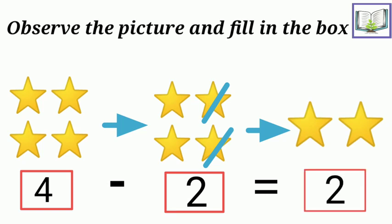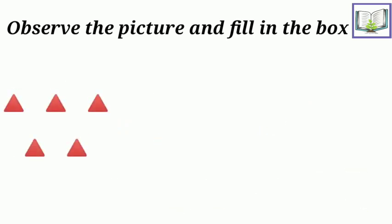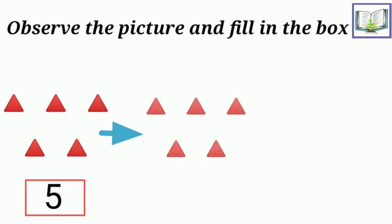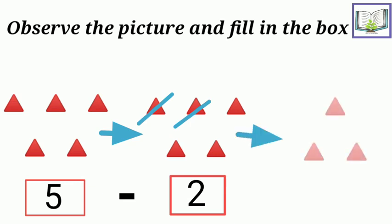So four minus two is equals to two stars. Let's see another example, there are triangles, how many? Five triangles. So out of five some gets subtracted, how many gets subtracted? Minus two. So five minus two gives us how much? That's great, five minus two is equal to three.